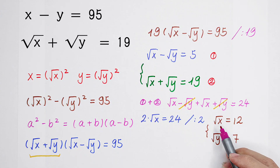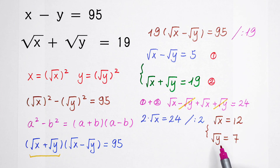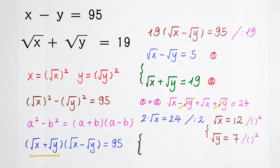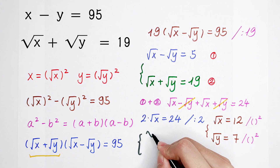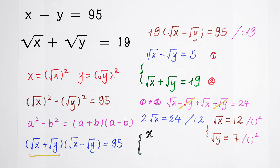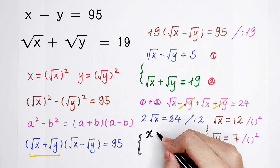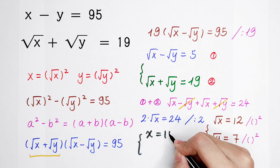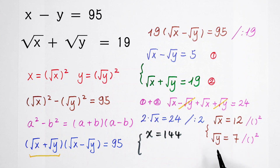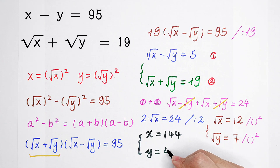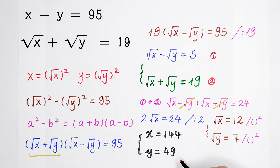Because we need the value of x and y, not the value of square root of x or square root of y, we square both sides. Square root of x squared equals x, so x equals 12 squared, which is 144. Square root of y squared equals y, so y equals 7 squared, which is 49. Our final answer is x equals 144 and y equals 49.